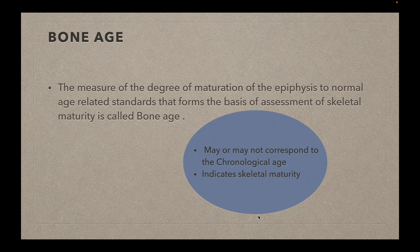Coming on to age estimation, the first thing we need to know is bone age. Bone age is the measure of the degree of maturation of the epiphysis relative to normal age-related standards that form the basis of assessment of skeletal maturity. The bone age may or may not correspond to the chronological age of the individual, and it indicates skeletal maturity.